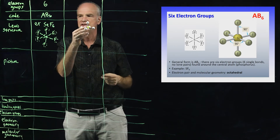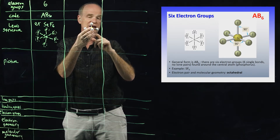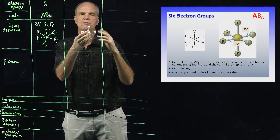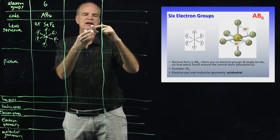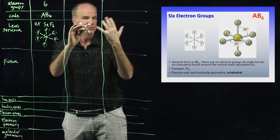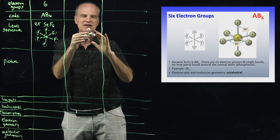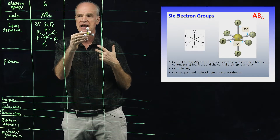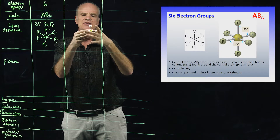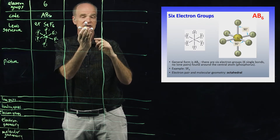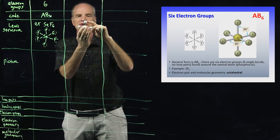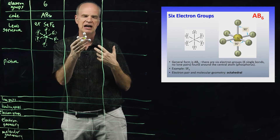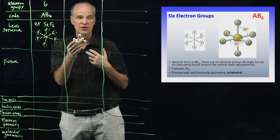Now if you look at the AB6 molecule, it looks similar — there may appear to be axial and equatorial atoms. But notice the angles: this angle is 90 degrees, this angle is 90 degrees, and the equatorial angle is also 90 degrees. All the angles between atoms are 90 degrees. Therefore, we cannot in any way discriminate which atoms are axial and which are equatorial. If you rotate the molecule 90 degrees, it looks exactly the same, because all angles are 90 degrees.